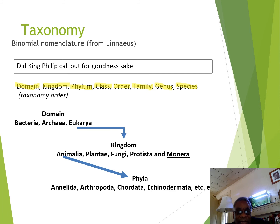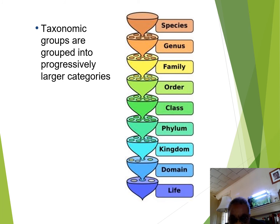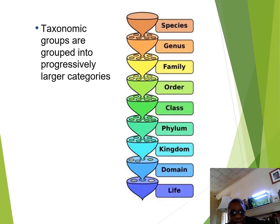As we move from species all the way up to domain, we can see the different groupings. This is an important distinction, and we'll use it for a powerful understanding of relationships among different animals. The taxonomic groups are organized into progressively larger categories as you move up the hierarchy.